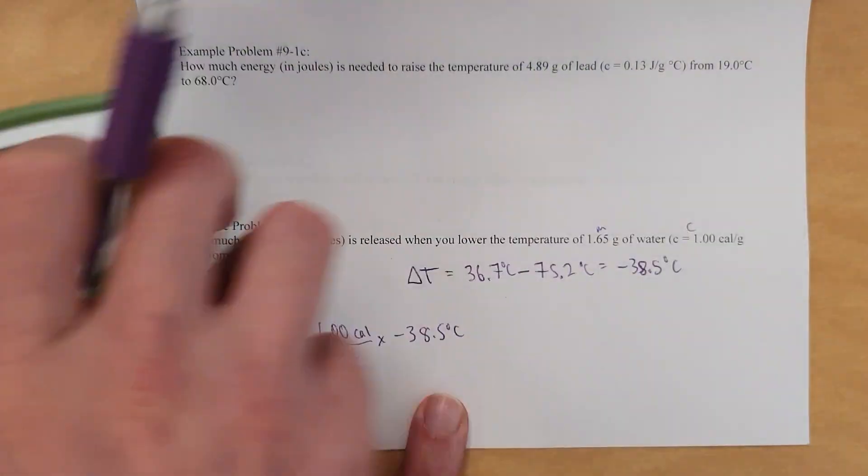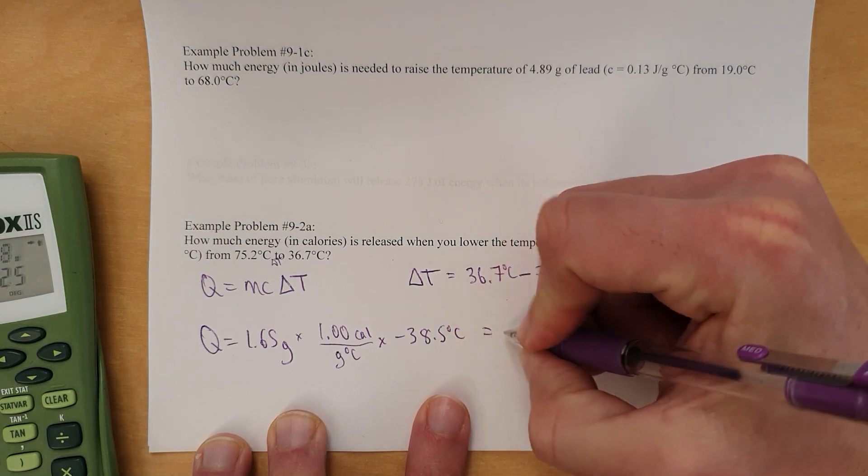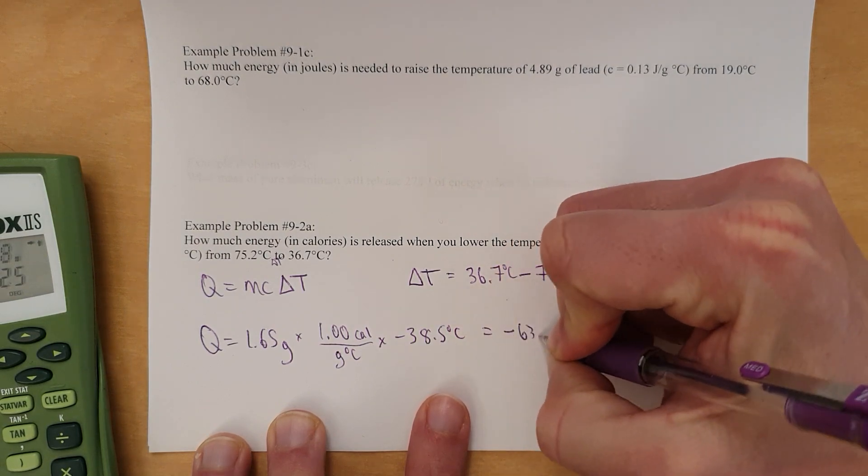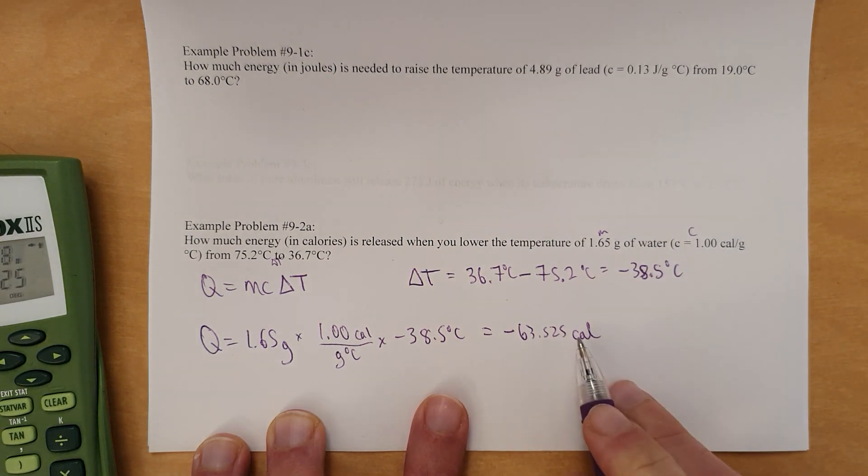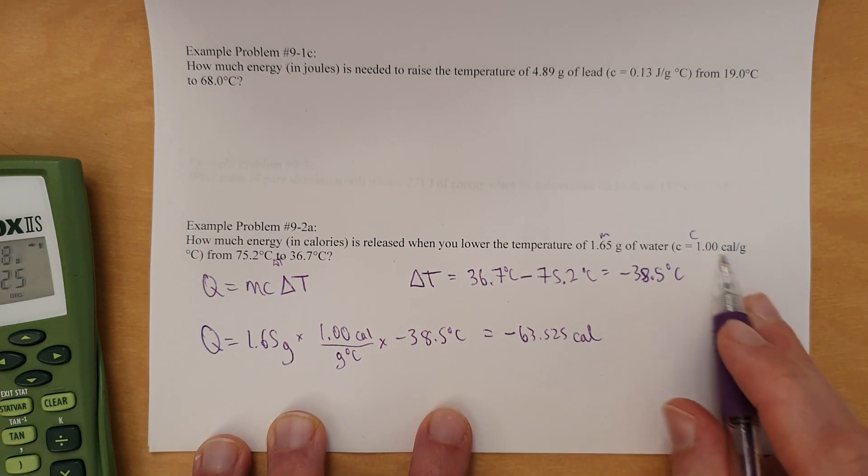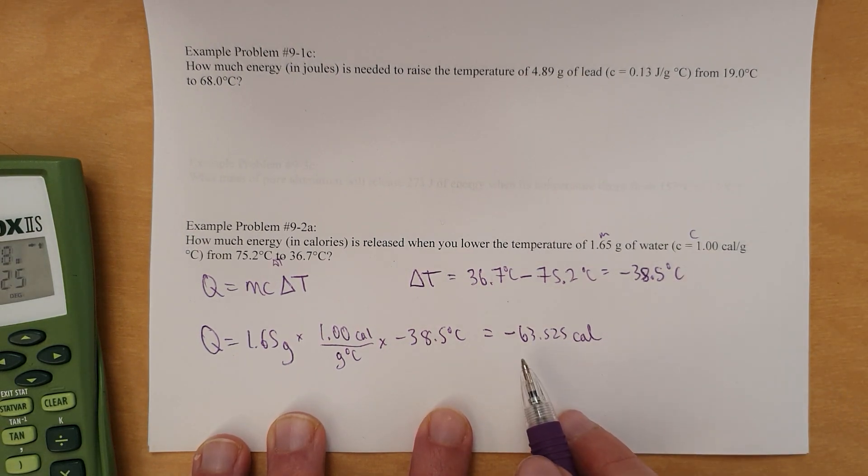And so, let me set that aside. So, let's put the raw calculator in. So, negative 63.525 calories. That's the standard abbreviation for calories, as you can see here. So, that's a raw answer.